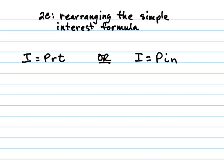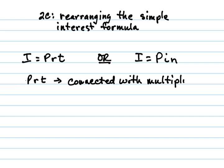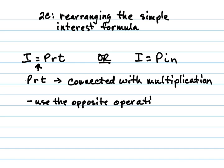To rearrange the formula, you need to know that P, R, and T are all connected with multiplication. This is an equation because it has the equal symbol, which means we can rearrange it by using the opposite operation. If things are connected with multiplication, we can take them apart by using division.